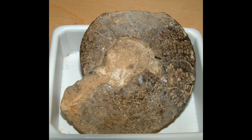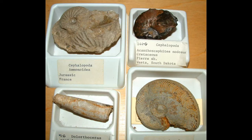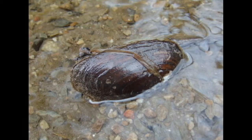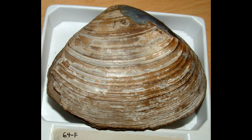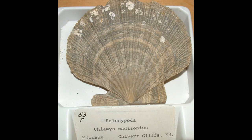While bivalves — such as clams, oysters, mussels, scallops, etc. — some make shells out of aragonite, the more common form is calcite in both modern and fossil forms.